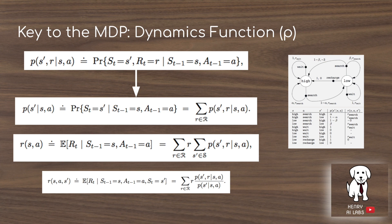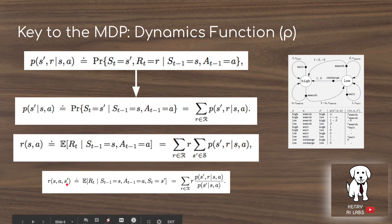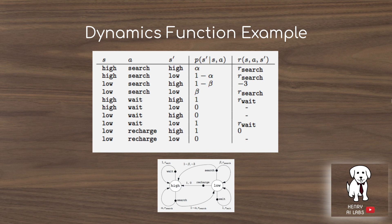Another key element of MDPs is the dynamics function p. The dynamics function tells you how the environment transitions with respect to different actions taken, as well as the rewards you can expect as it transitions from state to state. From the four-argument dynamics function — next state and reward given current state and action — you can also derive: the next-state probability given a state-action pair, the reward for a state-action pair, and the reward for a state-action-next-state tuple. This is better understood through a concrete example like the recycling robot, where a table shows state, action, next state, transition probability, and reward.